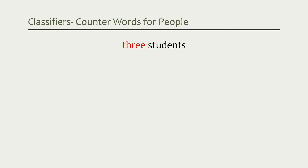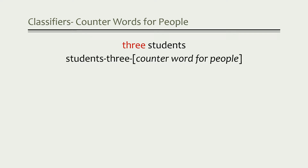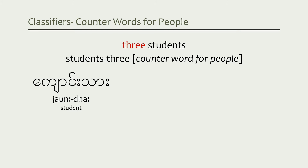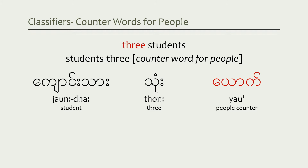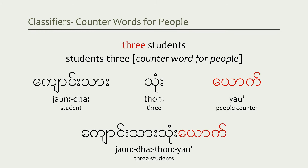Let's look at another example. I want to be able to say 'three students'. Again, the word order needs to be changed to: students, three. The counter word we're going to use for students is the same counter word we use for people in general or specific groups of people. So the word for student is 'jaonda', the word for three is 'thong', and the counter word for people is 'yao'. Put it all together: 'jaonda tung yao'. That's our people counter word — something we're going to use a lot.